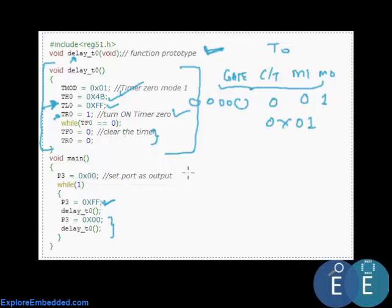In the main program, it's pretty simple. Since the LEDs are connected to port 3, we send 0x00 to make it as output. Then what we do is we send all 1s to port 3, then we call delay of 50 milliseconds. We turn the LEDs off and then we call a delay of 50 milliseconds again. So this will generate a LED blinking effect.